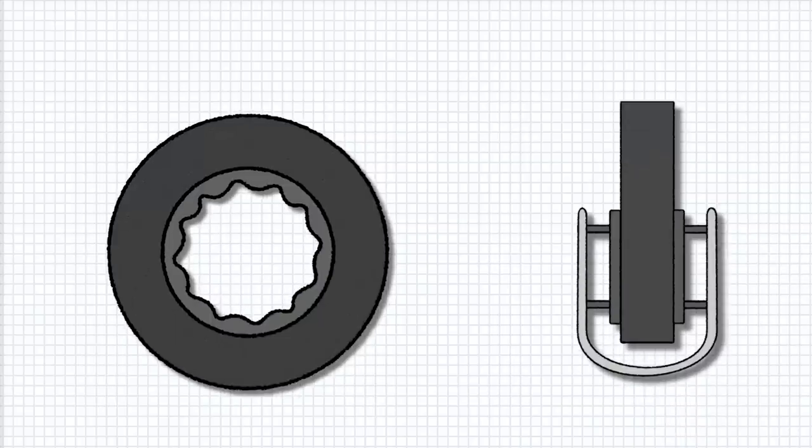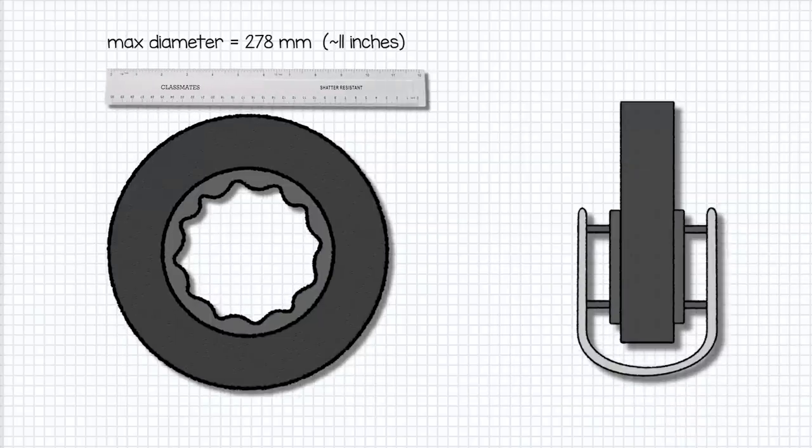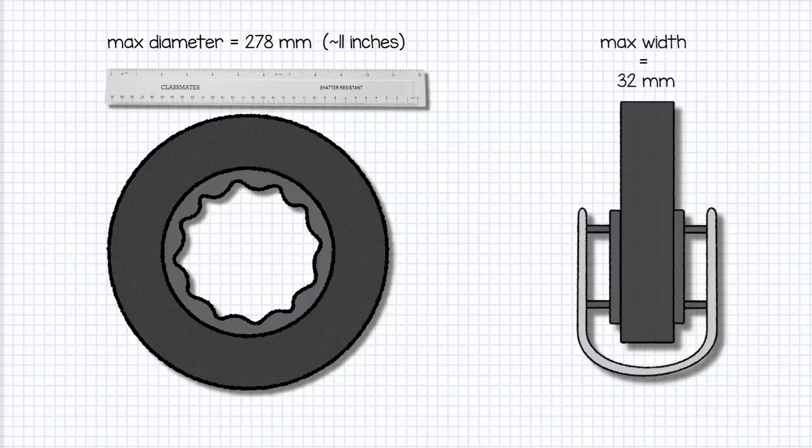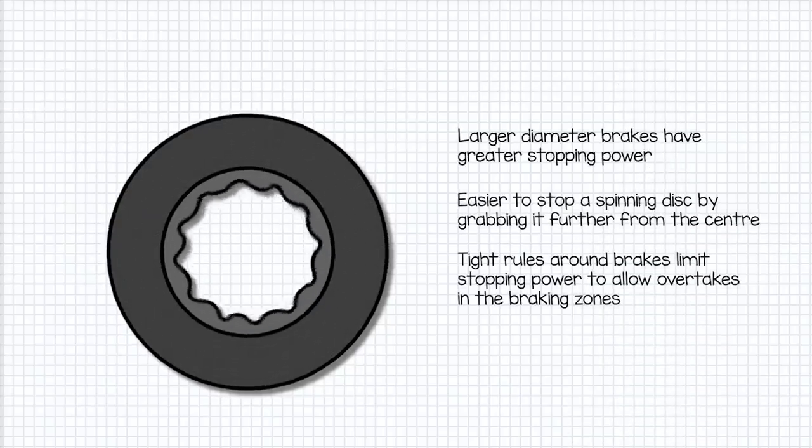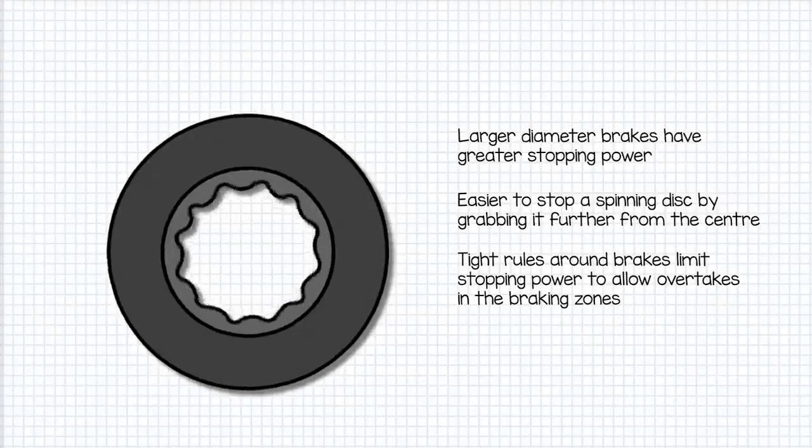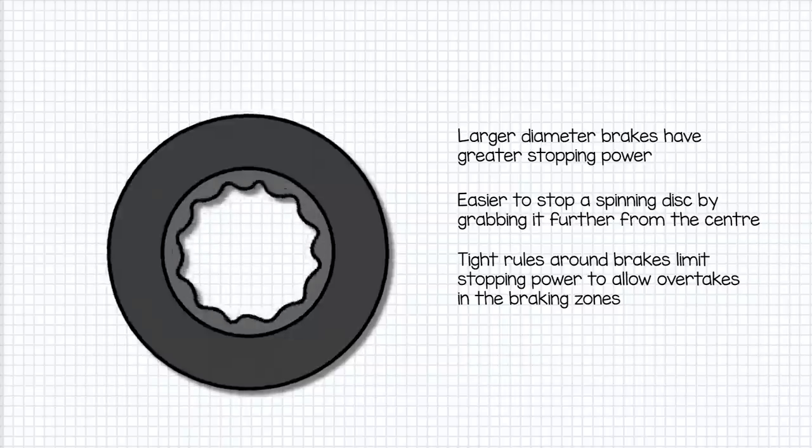Onto the actual brake pad and discs then. The brake disc can be no larger than 278 millimeters in diameter or 32 millimeters thick. A larger diameter means greater stopping power as it's easier to stop a spinning disc by grabbing it further from the pivot point than closer to the center. The restriction of the rules in this area is to limit braking power of the car so braking zones can remain somewhat competitive.